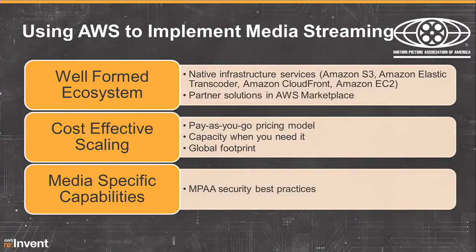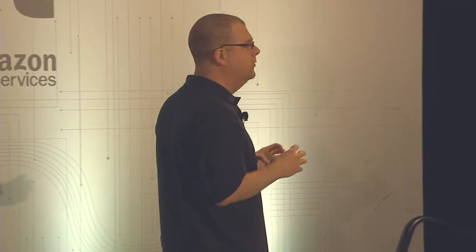Let's go into AWS. At the highest level, we have a very well-formed ecosystem to address media use cases. An example we'll look at today is the Elastic Transcoder product, which allows you to convert videos from various formats to one another. S3, EC2, and CloudFront are services that can be used natively for media use cases. There's also a lot of choice in the AWS Marketplace from our partners. AWS's core model — cost-effective scaling and paying only for resources you actually use — is well suited for media customers, and we've added media-specific capabilities including MPAA certification.